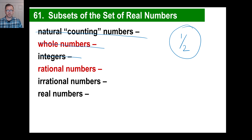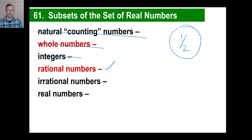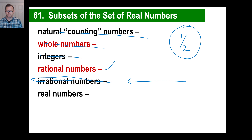Is one-half a rational number? In other words, is it possible to make a fraction out of it? Well, yes — it is a fraction. So yes, it is a rational number. By definition then, it's not an irrational number. Is it on the number line somewhere? Is it a real number? There's a zero and there's a one — we can put one-half right there. Yes, it is also a real number.